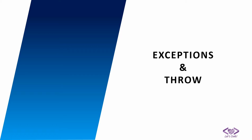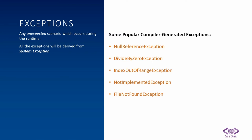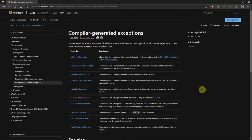Any unexpected scenario which occurs during the runtime of our application is generally called an exception. In the .NET framework, any exception is derived from the System.Exception class. There are many popular compiler-generated exceptions like NullReferenceException, DivideByZeroException, IndexOutOfRangeException, NotImplementedException, FileNotFoundException, and many more. In the Microsoft docs there is a page listing all compiler-generated exceptions and their explanations.